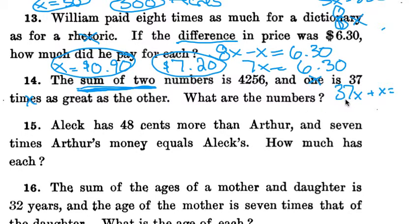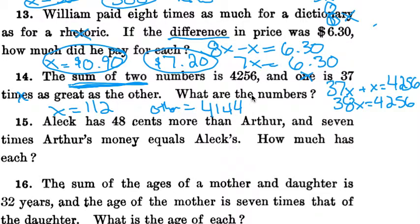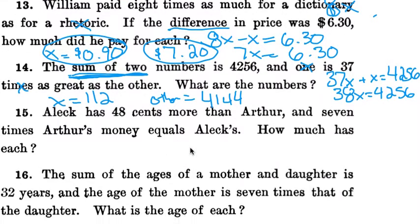The sum of two numbers is 4,256, so 37x plus x equals 4,256. So we actually have 38x equals 4,256. 4,256 divided by 38, x equals 112. I used the calculator. And then 112 times 37, the other is 4,144. So that one's not super tricky, but it's nice to have a calculator if you're allowed to use it.